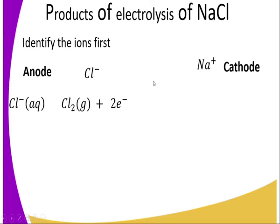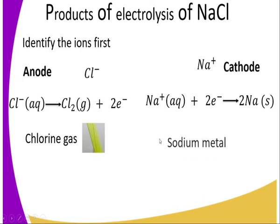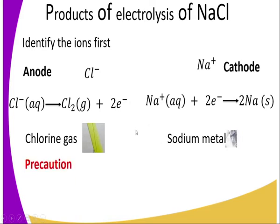So what happens after they migrate? Chloride ions are oxidized to chlorine gas, and two electrons are produced. At the same time, sodium ions migrate to the cathode where reduction takes place — they are reduced to sodium atoms. The observation we make is that chlorine gas is produced at the anode, which is a green-yellow gas, and sodium metal is deposited at the cathode, which is silvery and shiny.